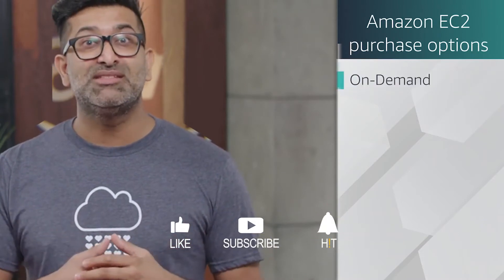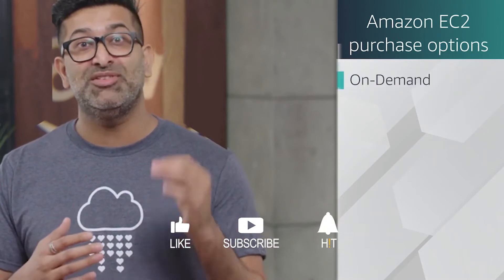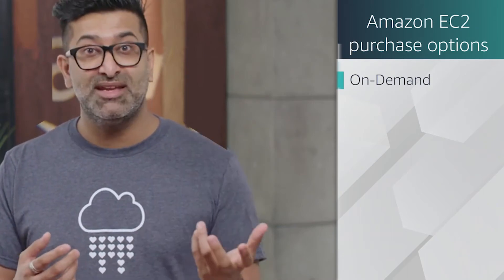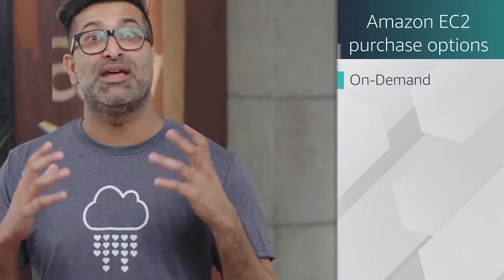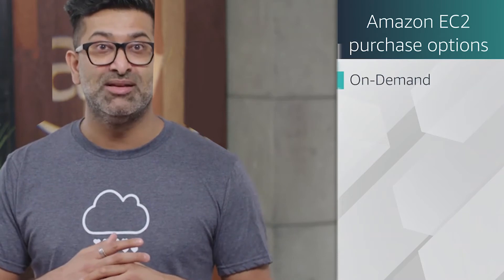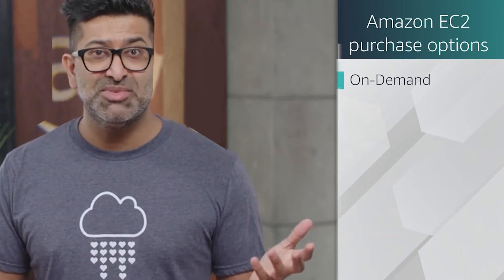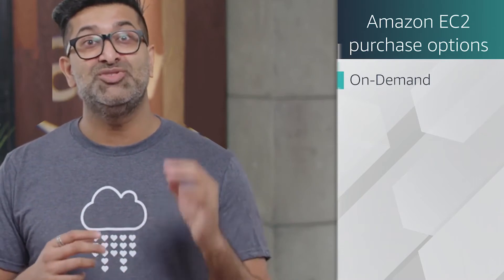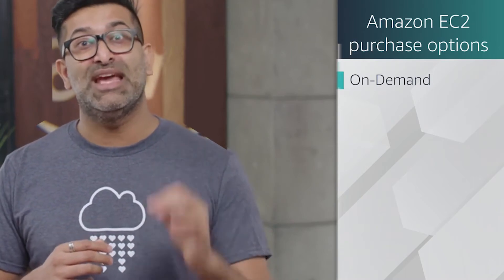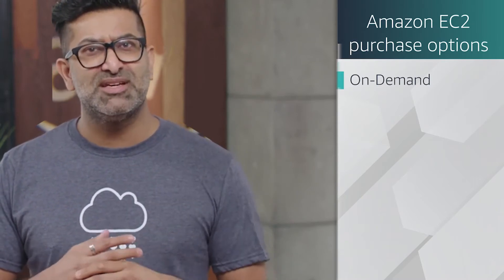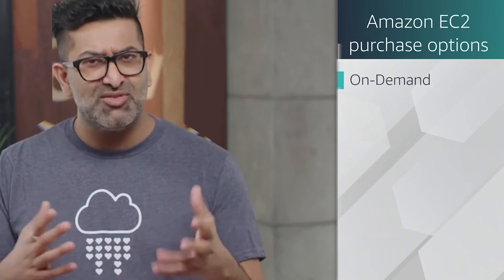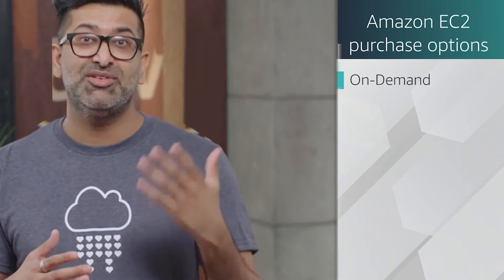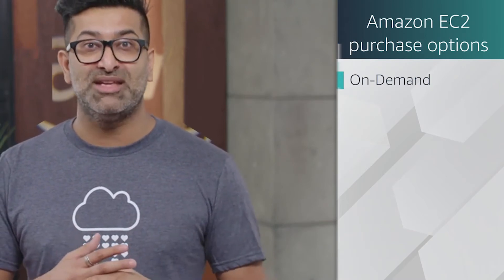On Demand means that you only pay for the duration that your instance runs for. This can be per hour or per second, depending on the instance type and operating system you choose to run. No long-term commitments or upfront payments are needed. This type of pricing is usually for when you get started and want to spin up servers to test out workloads and play around. You don't need any prior contracts or communication with AWS to use On Demand pricing.